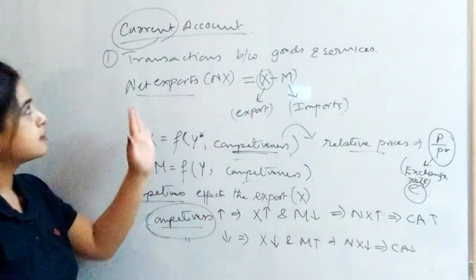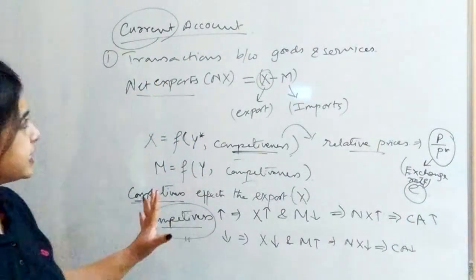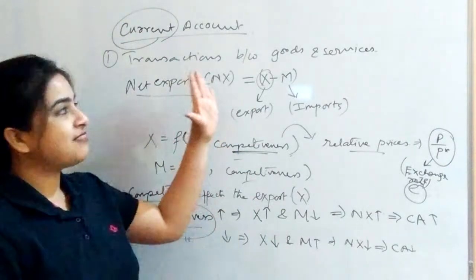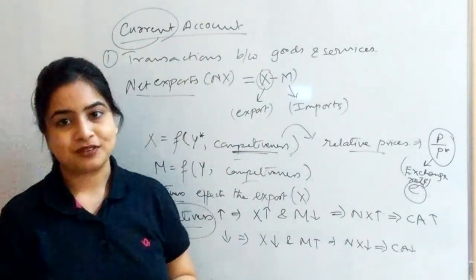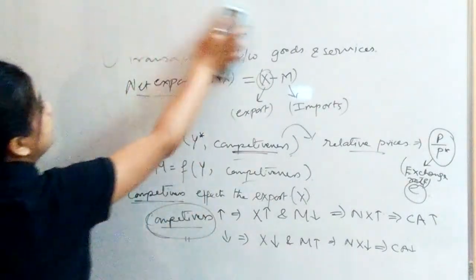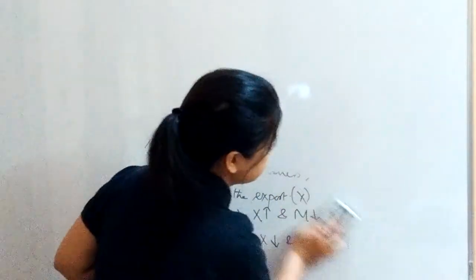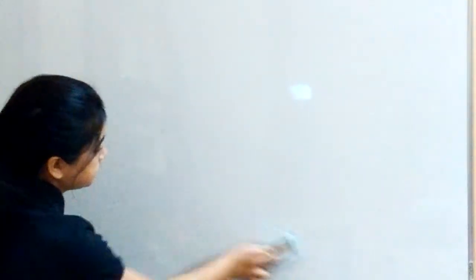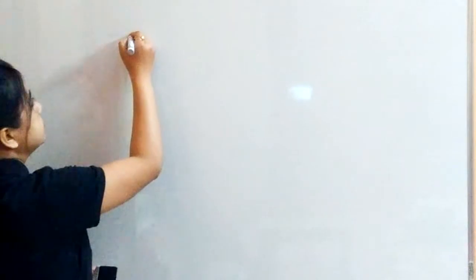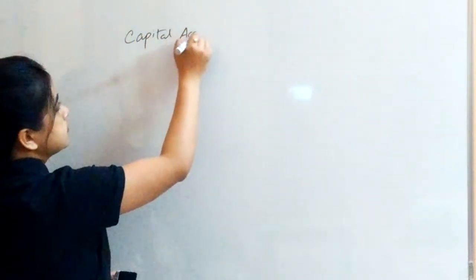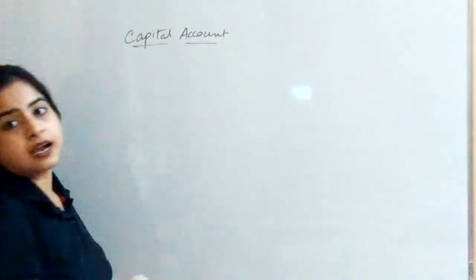So this is a brief, compact and crisp description giving you the important facts of the current account. Now let's move to the capital account, its importance, its constituents, and how it is determined.